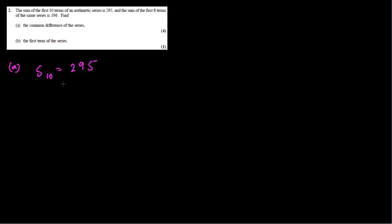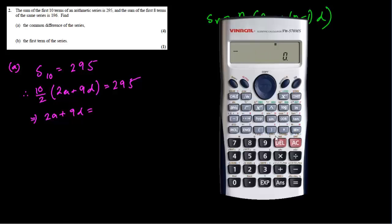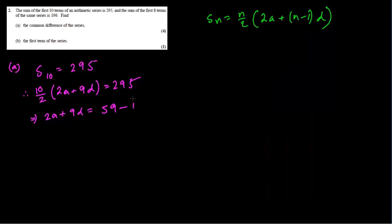Question number 2 is arithmetic series. Although summation was given in paper 1, this is a full-fledged arithmetic series where we have to form two simultaneous equations. The first: the sum of the first 10 terms is 295, so S10 = 295. Using Sn = n/2 × (2a + (n−1)d), with n = 10: 10/2 × (2a + 9d) = 295, giving 2a + 9d = 59. This is our first equation.